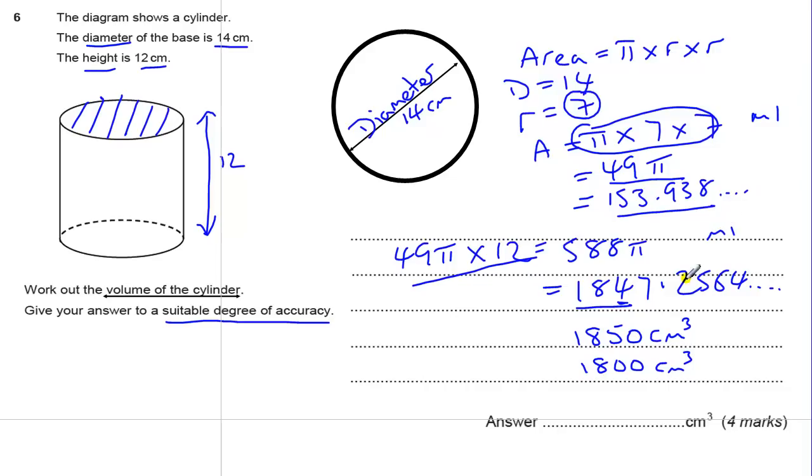So there's a method mark there, a method mark here. This answer, answer here, or here, gives us an answer mark.